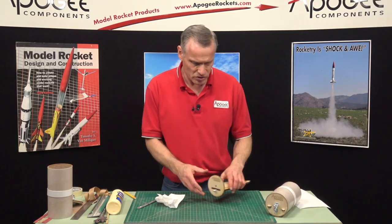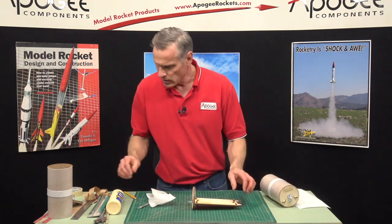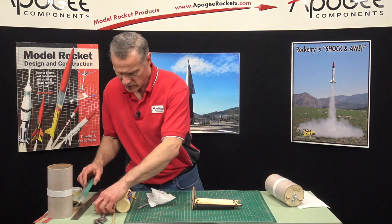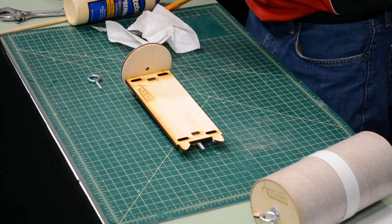Our next step is, so the glue is dried on this, is to put in the eye bolts. So you're going to need an eye bolt, two washers, and two nuts.